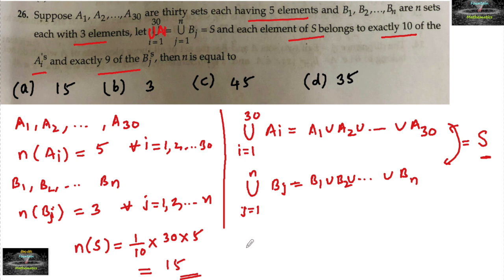The same condition applies: each element of S belongs to exactly 9 of the bj's. That means n(S) equals 1/9 times n times 3, which gives n/3. Since n(S) equals 15 from the previous calculation, we have n/3 equals 15, so n equals 45.